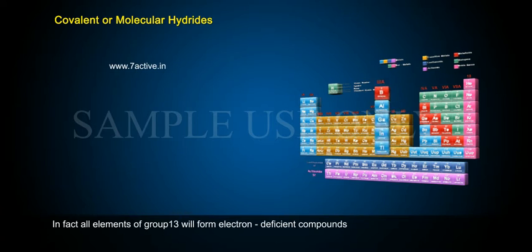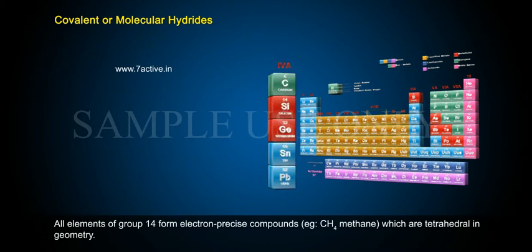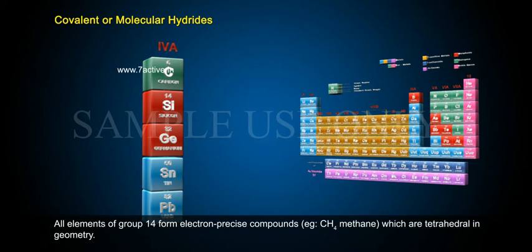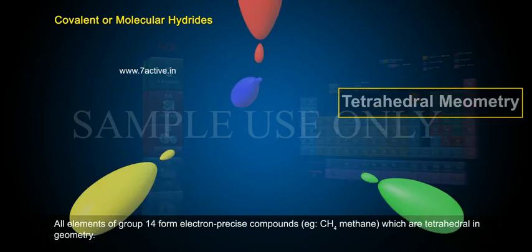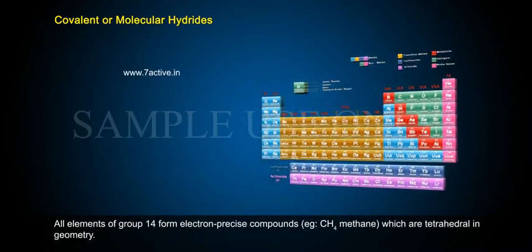In fact, all elements of group 13 will form electron-deficient compounds. All elements of group 14 form electron-precise compounds, such as CH4 (methane), which are tetrahedral in geometry.